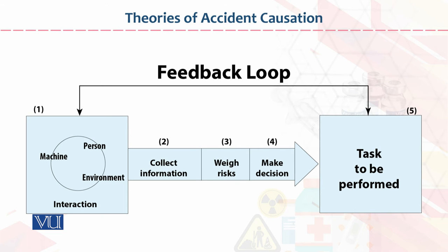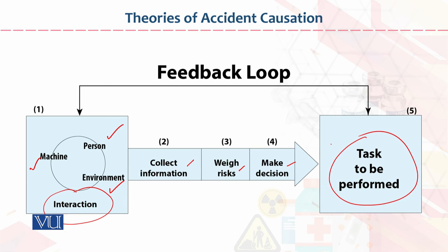In the feedback loop, the three elements — machine, person, and environment — interact with each other. Then information is collected and a decision is made. If all these things are in favorable condition, then the task to be performed will be successfully completed. This is what we call the feedback loop. If these things are not in a favorable situation, the task will be performed but not in an accurate way.